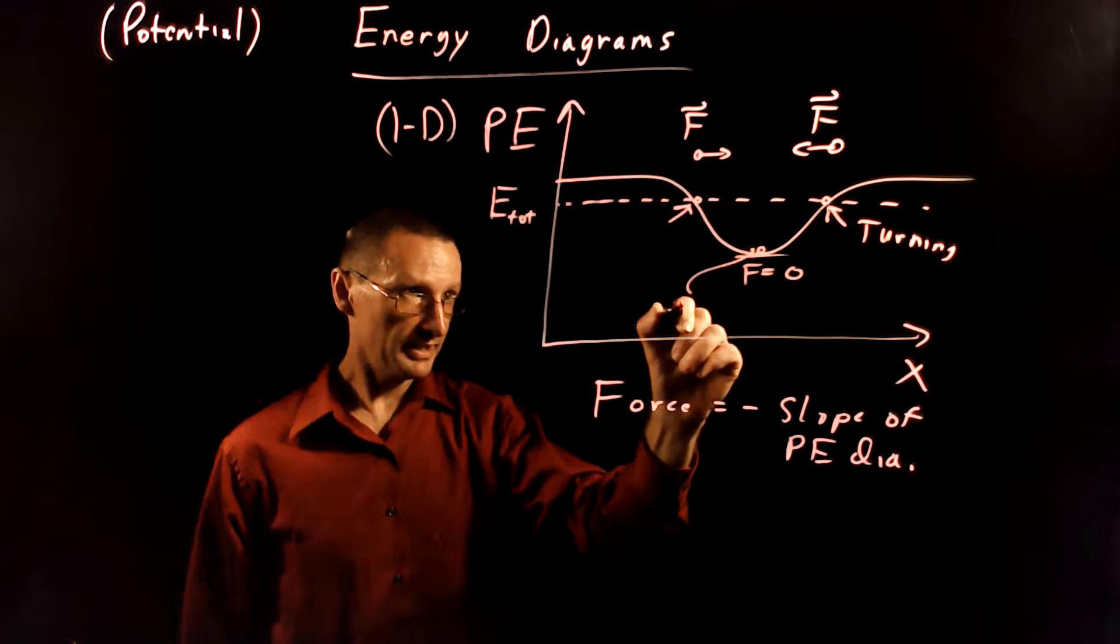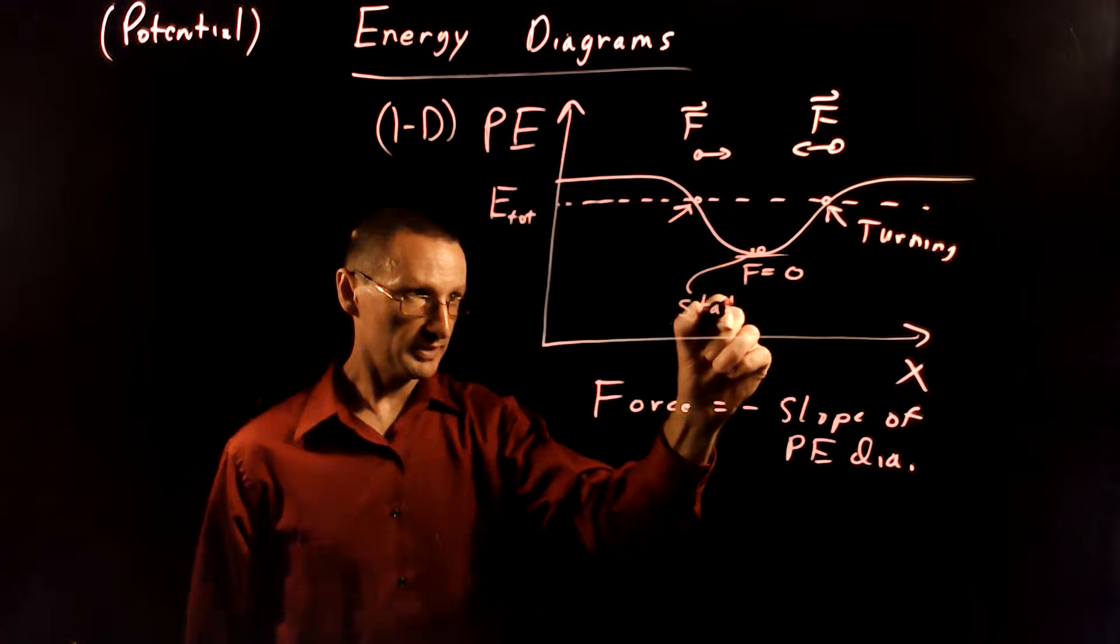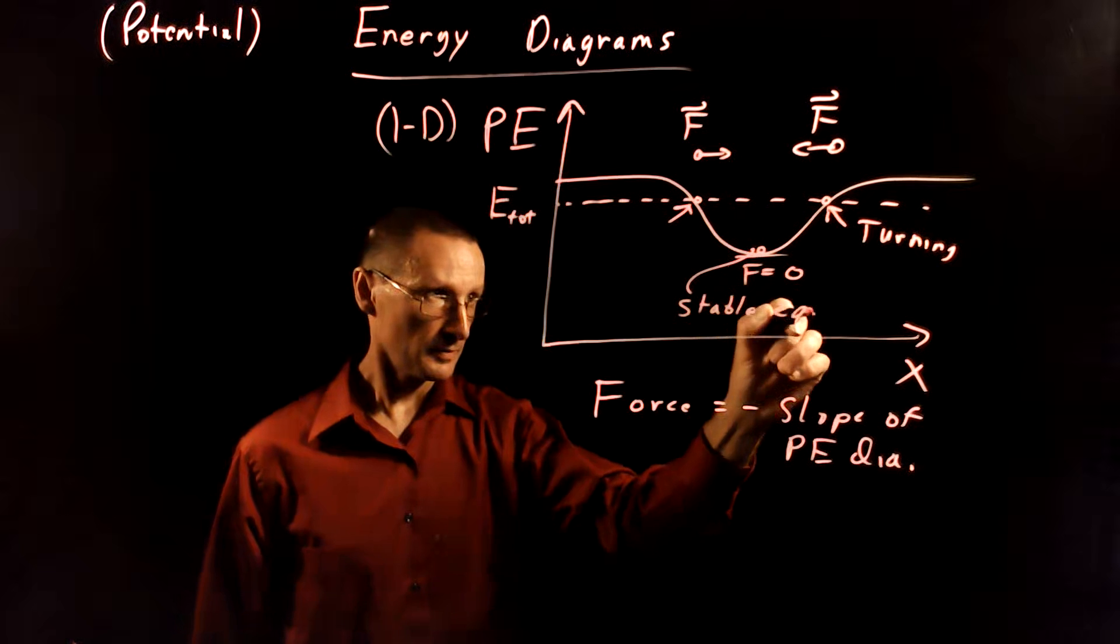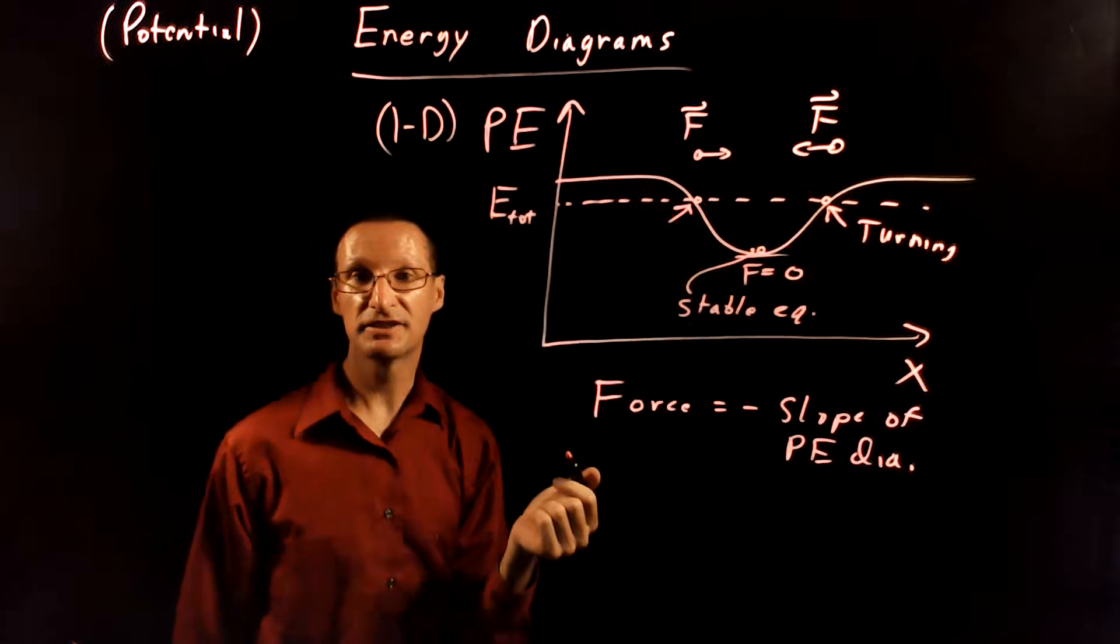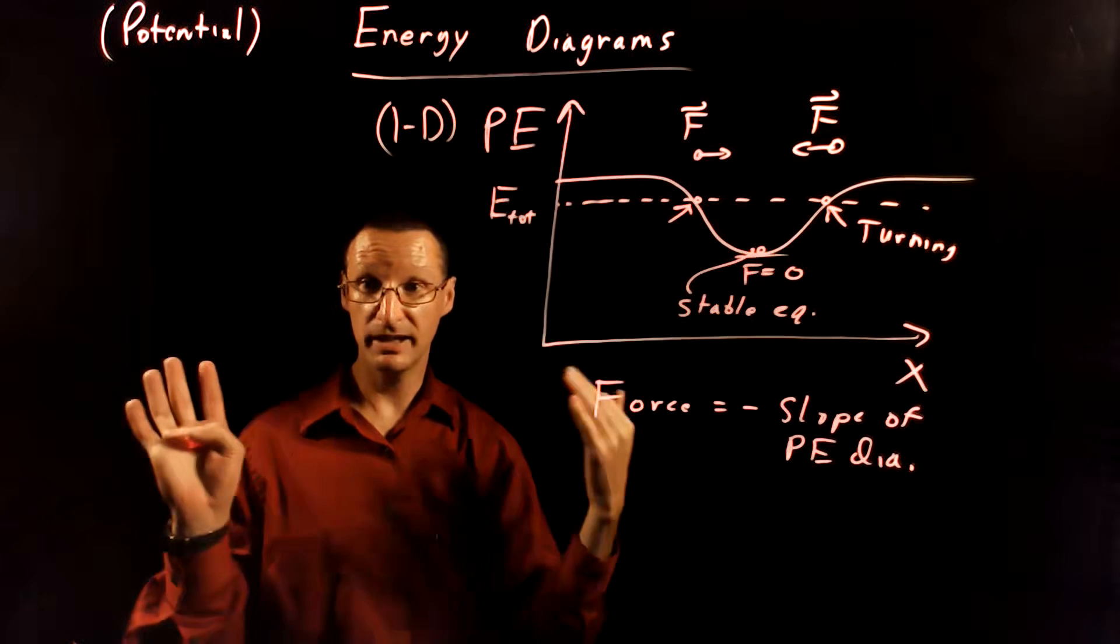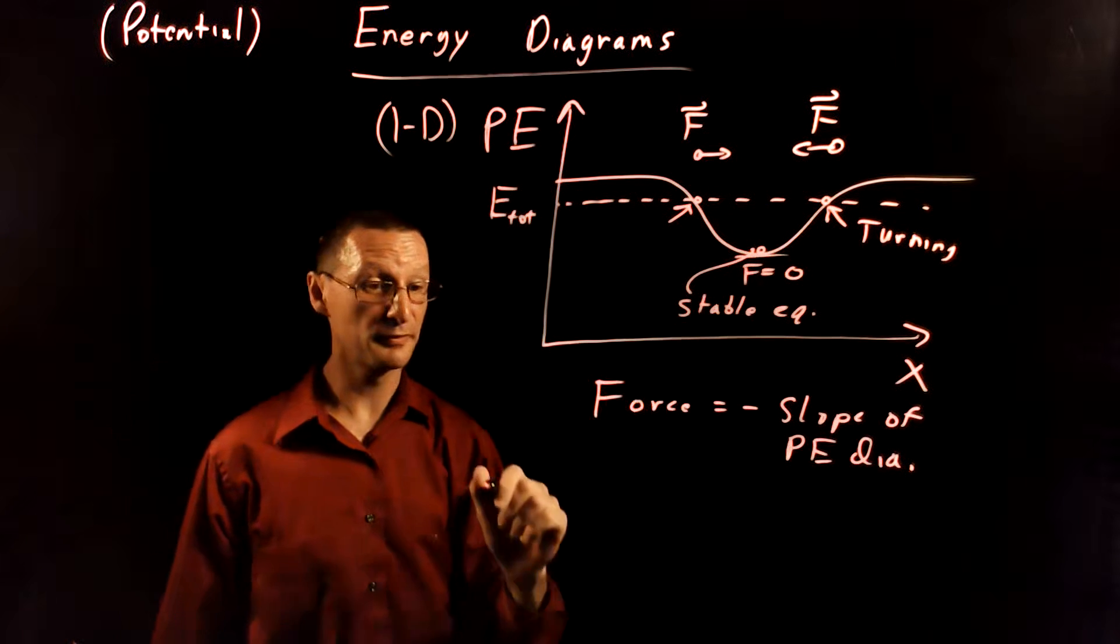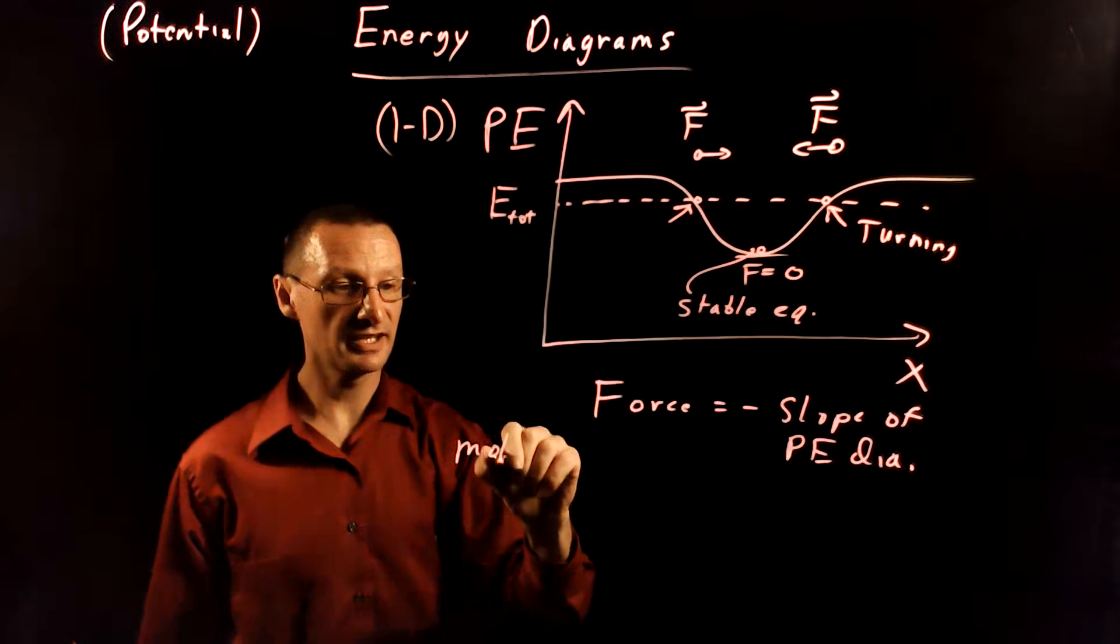This point here is called a stable equilibrium point. Now, this is useful for thinking about the direction of the potential energy and the force on big objects, but it's also especially useful for thinking about forces on things like molecules.